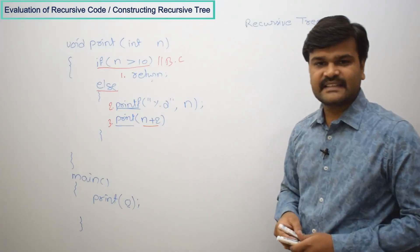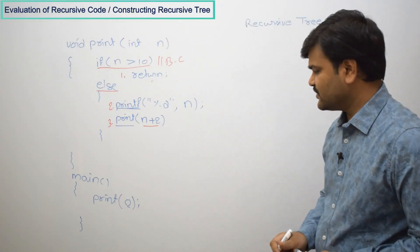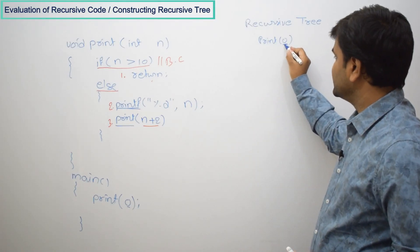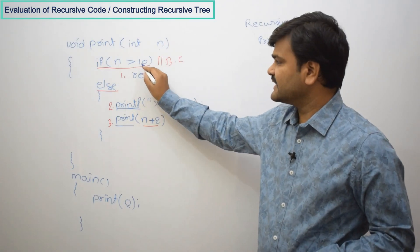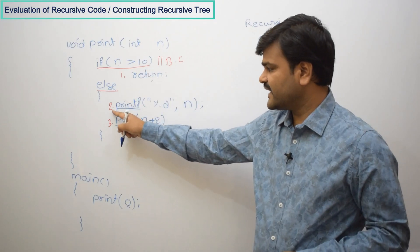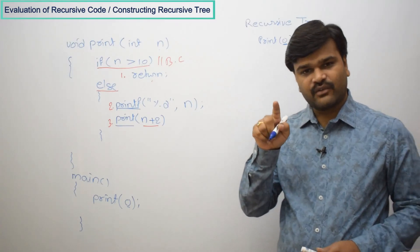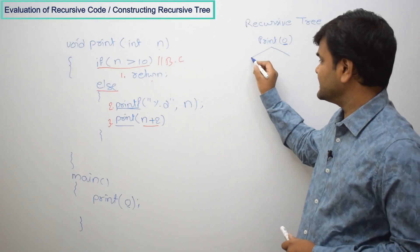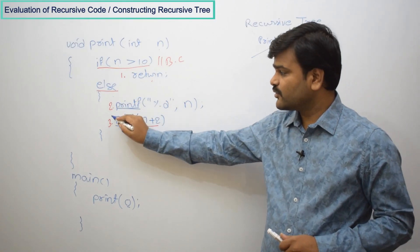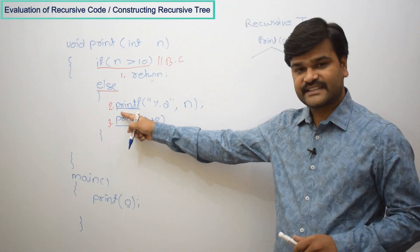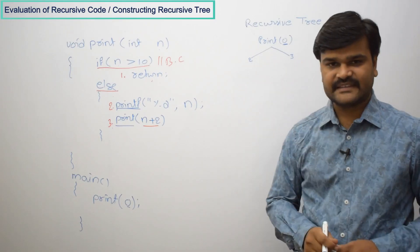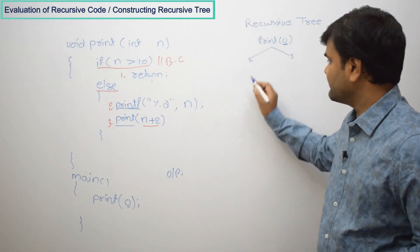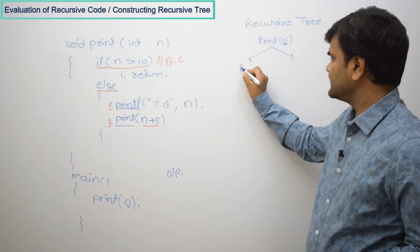With initial value 0, we start by printing 0. Current n value is 0. We check: 0 greater than 10 — condition is false. Whenever condition is false, you have to execute statements 2 and 3. When you have more than one statement, draw a separate branch for every statement, and sequentially assign sequence numbers left to right. So the second statement executes first — print the current n value. Current n value is 0, so you print 0.